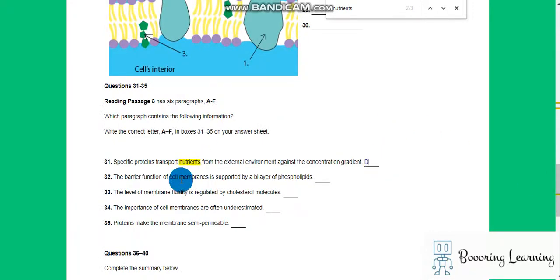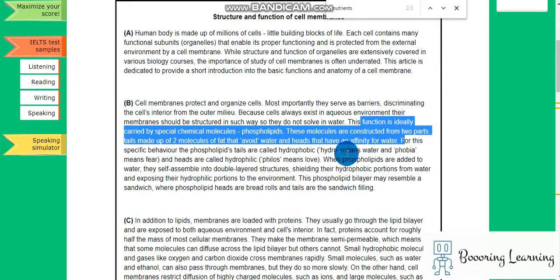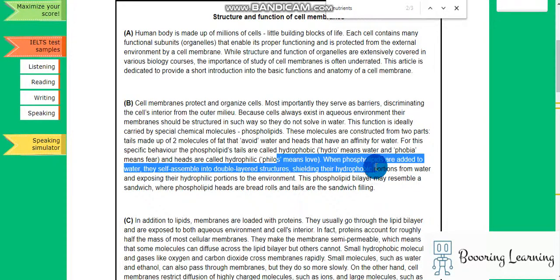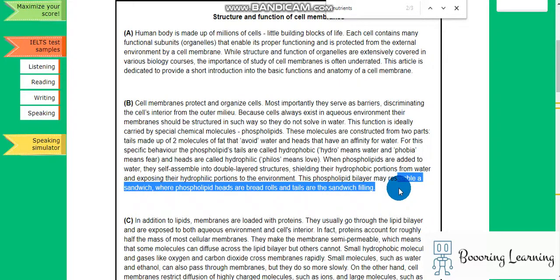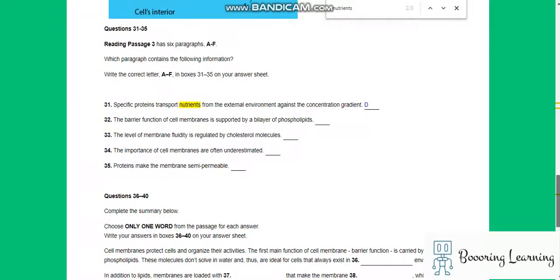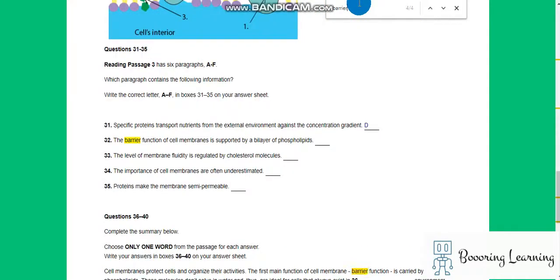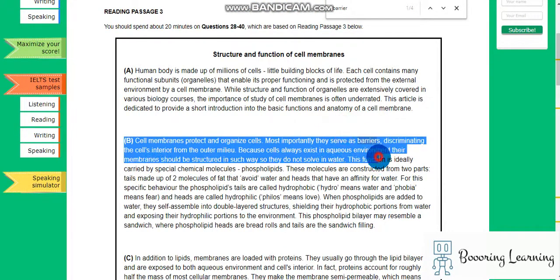The barrier function of cell membranes is supported by a bilayer of phospholipids. Okay, it was first mentioned in B. When phospholipids are added to water, shielding their hydrophobic portions from water and exposing their bilayer may resemble sand which were phospholipids. So, let's see if it is D. Barrier function, serve as barriers. Okay, it is B.